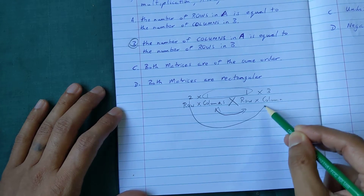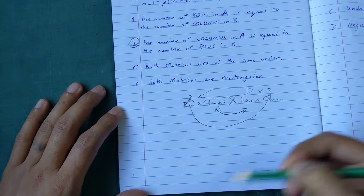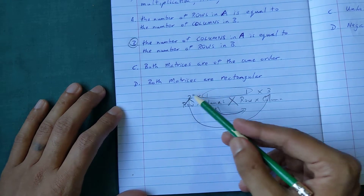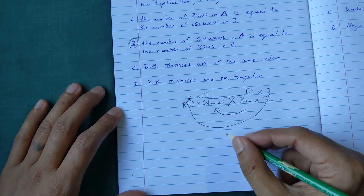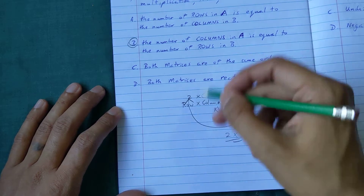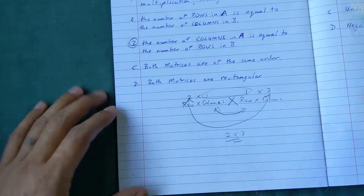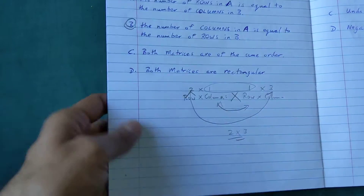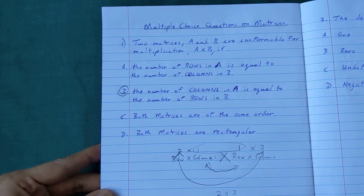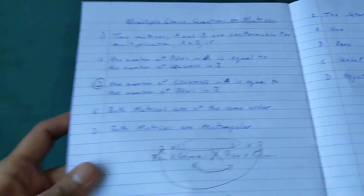That's the answer for this one — I can multiply the matrices. The nice thing is my answer is going to be the outside two numbers. So even before you actually multiply, you can double-check: one, can it multiply, and two, what will your answer look like? For example, the answer matrix would be a two-by-three. That's the procedure for how matrices can multiply.